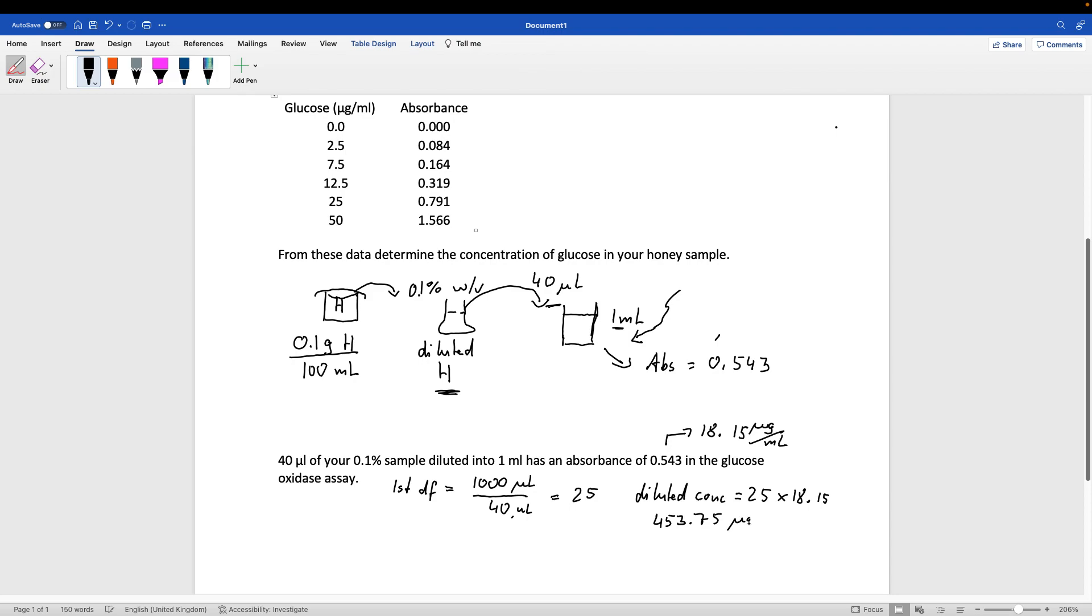Microgram per milliliter. So that is the concentration here in the diluted honey. 453.75 microgram per milliliter that we have here in the diluted honey.